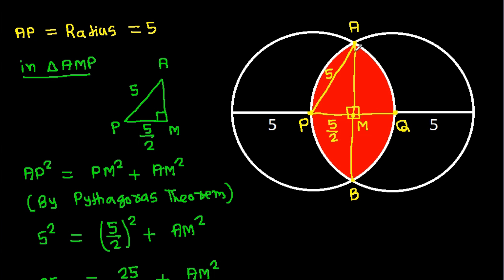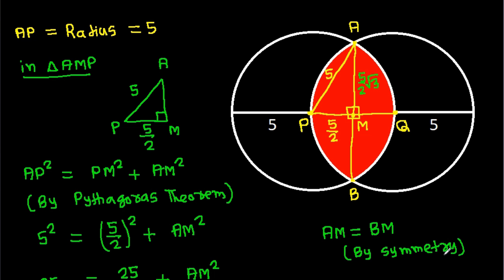So AM = (5/2)√3. We get AM = (5/2)√3. And AM will be equal to BM by symmetry, so BM is also (5/2)√3.